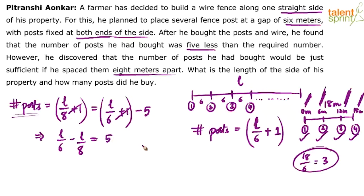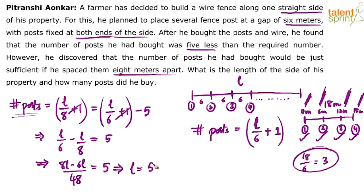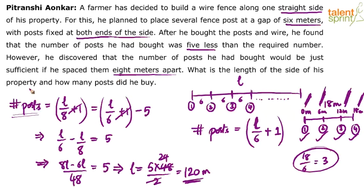Simplifying L by 6 minus L by 8 equals 5: the LCM of 6 and 8 is 48. So 8L minus 6L over 48 equals 5, giving 2L equals 5 times 48. Therefore L equals 5 times 48 divided by 2, which is 5 times 24, equals 120. The length of the side of his property is 120 meters.